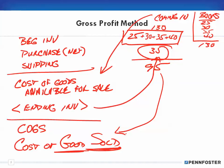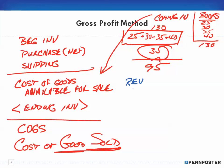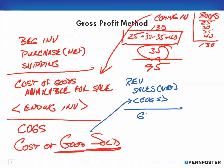That's the gross profit method. To help understand where this all comes into play, recall our income statement. In the revenue section we have our net sales — that's sales less discounts less returns and allowances. Then you subtract out your cost of goods sold, and that gives you your gross profit. From gross profit you then take out the rest of your expenses.